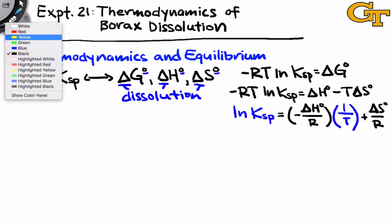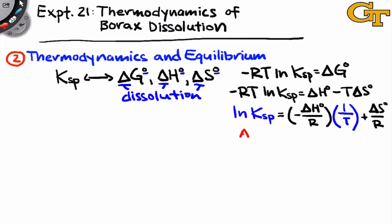The form of this equation may look a little bit familiar if you think back to the kinetics experiment. On the left, we have the natural log of something, and on the right, we have some constant times 1 over T plus some other constant.